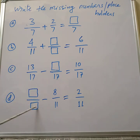Next, missing numbers are given in a fraction. We have to subtract from 8 by 11 to get the answer 2 by 11. Now see here, the answer is 2 by 11, denominator is 11.